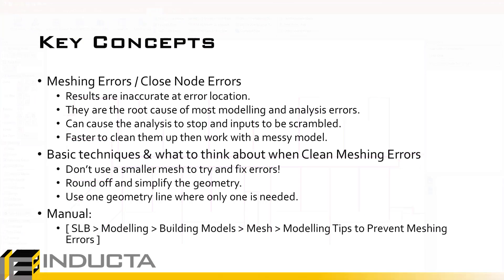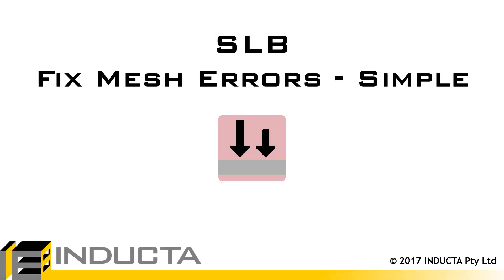Covering the main concepts: when there are meshing errors, we should always round off to one or two decimal places. We should never use a smaller mesh size to try to clean up meshing errors — it increases runtime and potentially hides errors. The other key concept is to only use one geometry line where one geometry line is needed. This concludes this video. Thank you for watching.